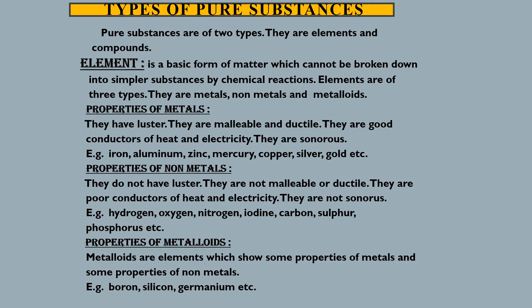Properties of non-metals are: they do not have luster, they are not malleable or ductile, they are poor conductors of heat and electricity, and they are not sonorous. Examples include hydrogen, oxygen, nitrogen, iodine, sulfur, carbon, phosphorus, etc.